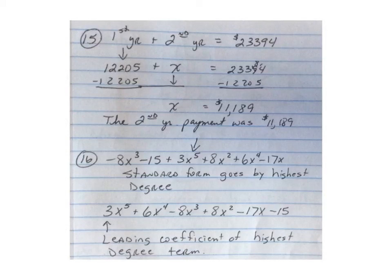On number 15, first year plus second year gives you a total of $23,394. It tells you that the first year you paid $12,205, so $12,205 plus x. You subtract that amount from both sides, and you get x is equal to $11,189. So the second year payment was $11,189.